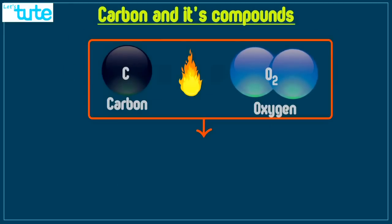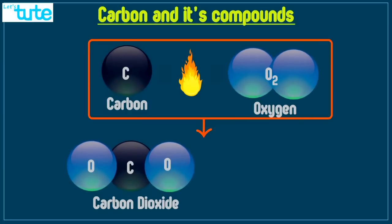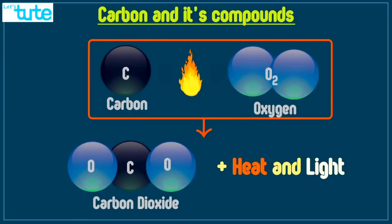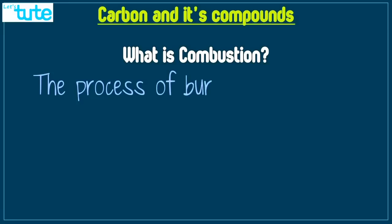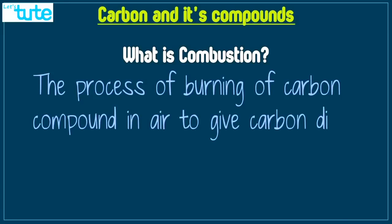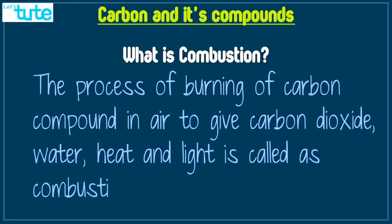We all know that carbon in all allotropic forms burns in presence of oxygen to give us carbon dioxide along with 2 components. These 2 components are heat and light. Now what does combustion mean? The process of burning of carbon compound in air to give carbon dioxide, water, heat and light is called as combustion.